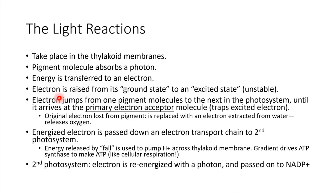So the electron that's energized is going to start jumping around — it'll jump from one pigment molecule to the next, hopping from chlorophyll to chlorophyll all around inside of the photosystem, until finally there's a molecule that can hang on to it. That's called the primary electron acceptor. The original electron that got excited in the first place has to get replaced, and this is where water comes into play.